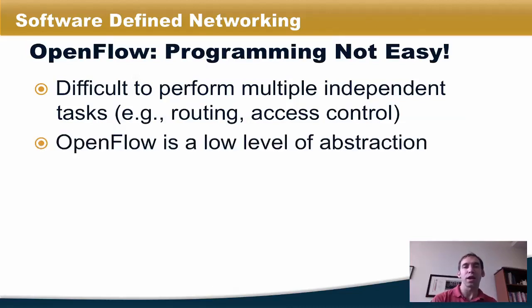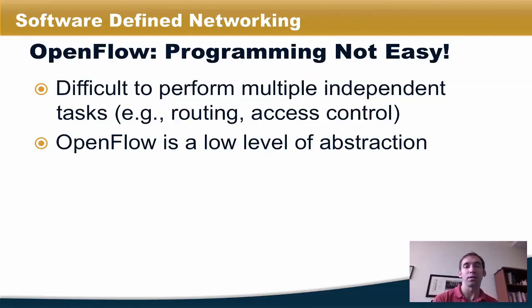Second, OpenFlow offers a very low level of abstraction. It provides a control channel to control the flow table entries in switches, but we're talking about a level of abstraction that is controlling entries in memory. Operating at this level of abstraction to perform higher level tasks like implementing security policies or traffic load balance is particularly difficult. We need higher level abstractions to perform these more complicated functions.